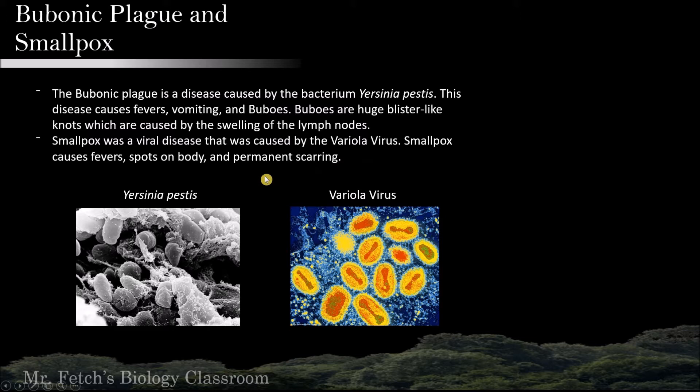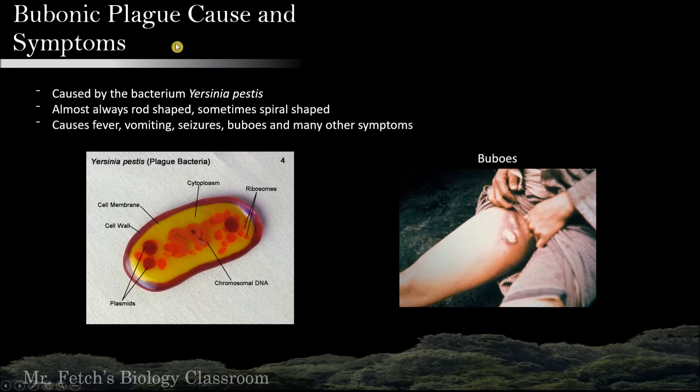The bubonic plague is caused by the bacterium Yersinia pestis, which is almost always in a rod shape, but sometimes can be in a spiral shape. It causes fevers, vomiting, seizures, buboes, and many other symptoms.